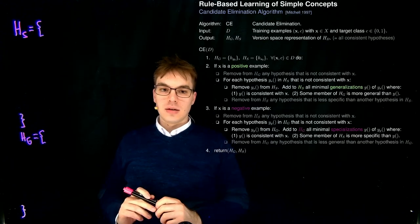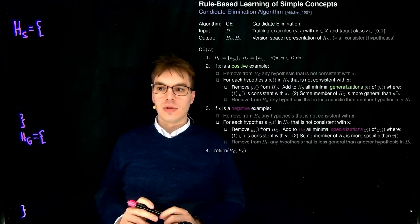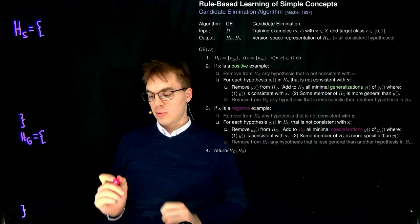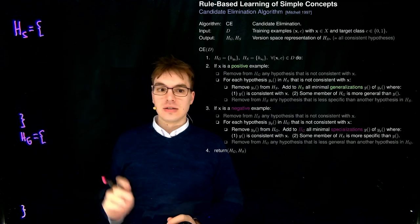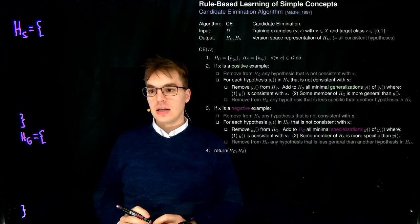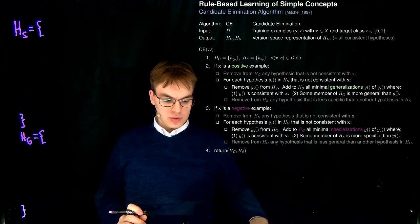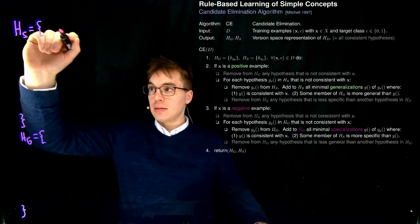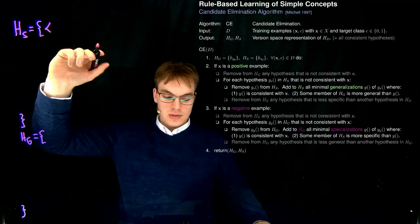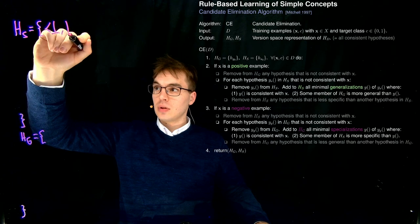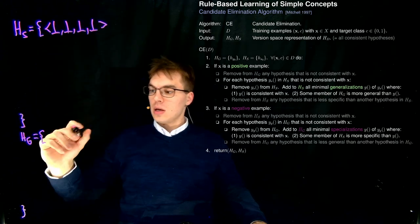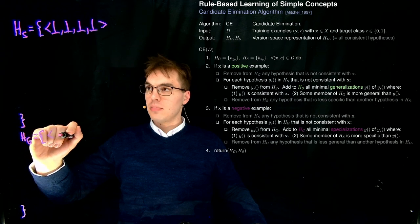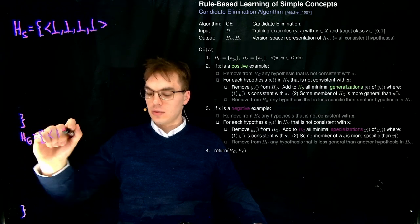Let's apply the Candidate Elimination Algorithm on our wine competition problem. First, we have to initialize our HG and HS sets using the maximally specific hypothesis and the maximally generic one.